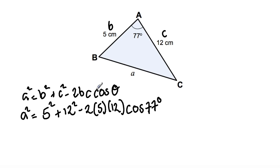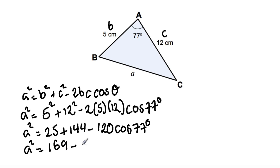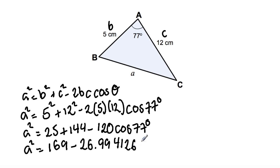Now simplifying further: A squared is equal to 25 plus 144 minus 120 cos 77 degrees. 25 plus 144 equals 169, so A squared is equal to 169 minus 120 times cos 77, which equals 26.99412652.